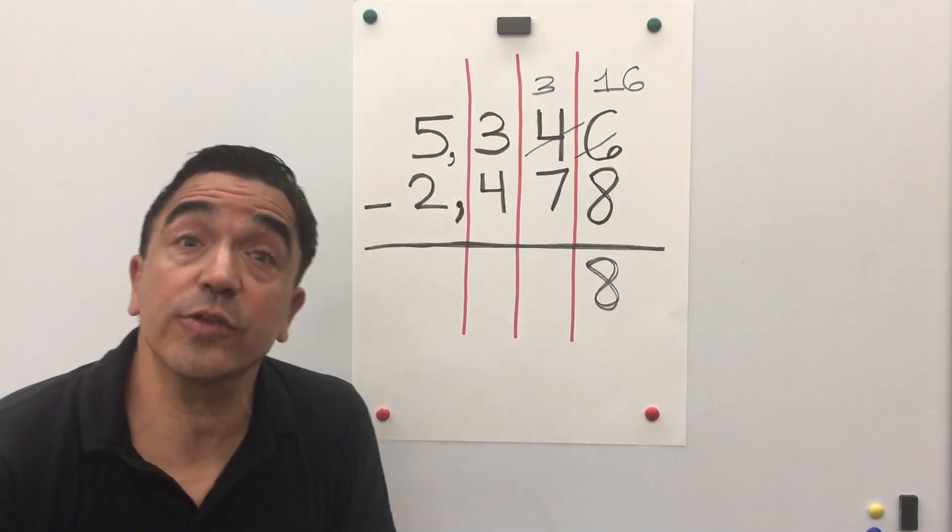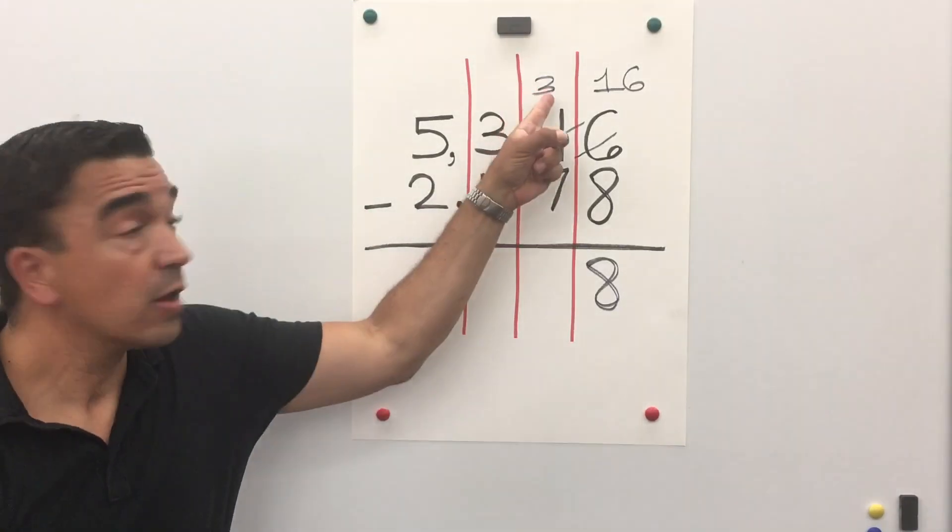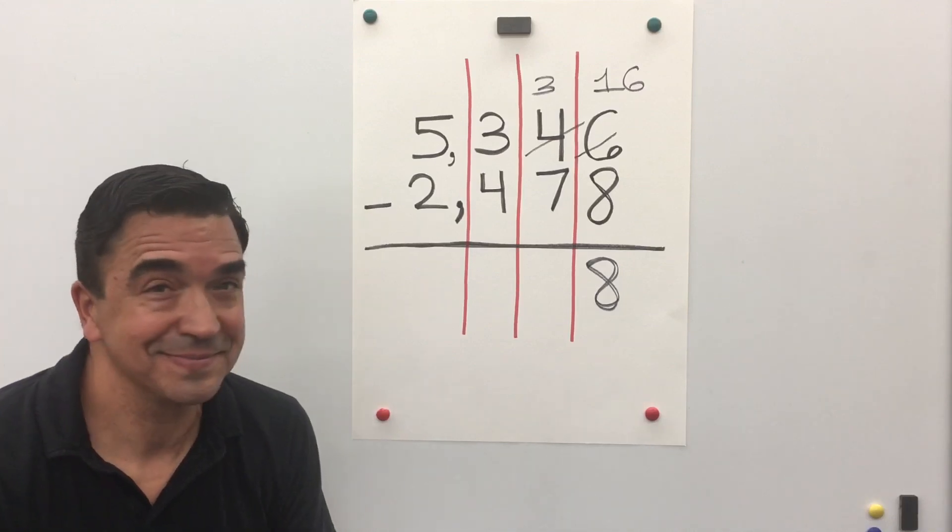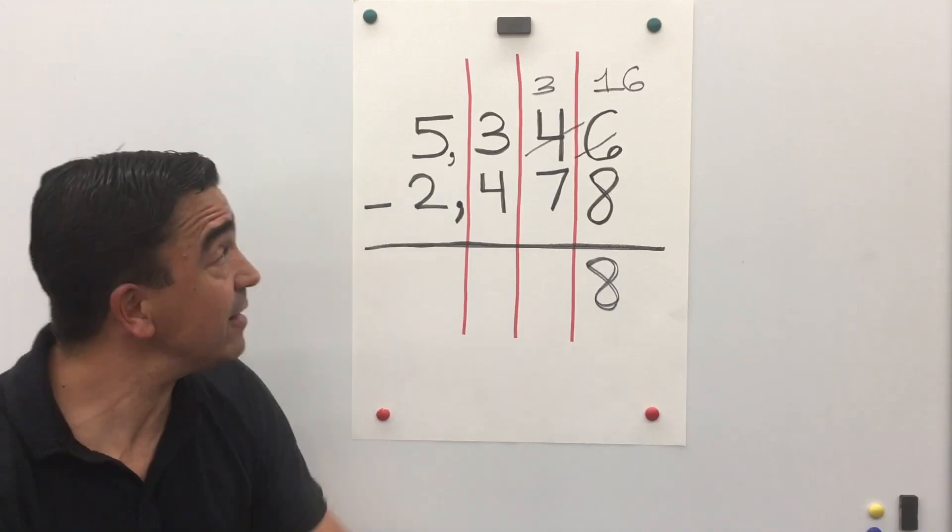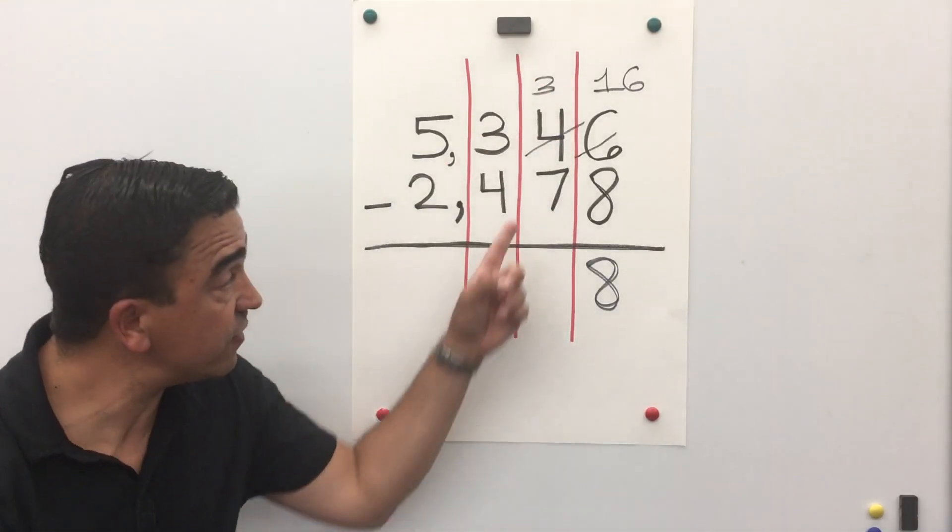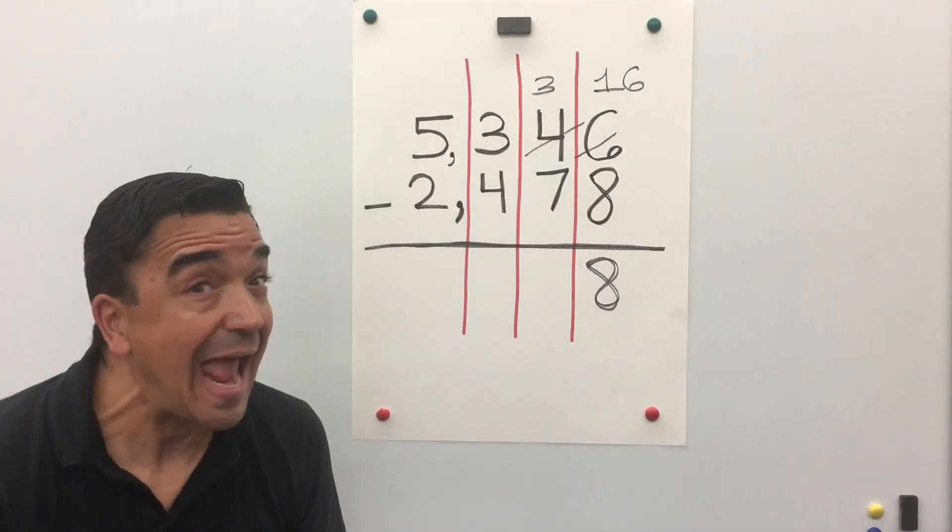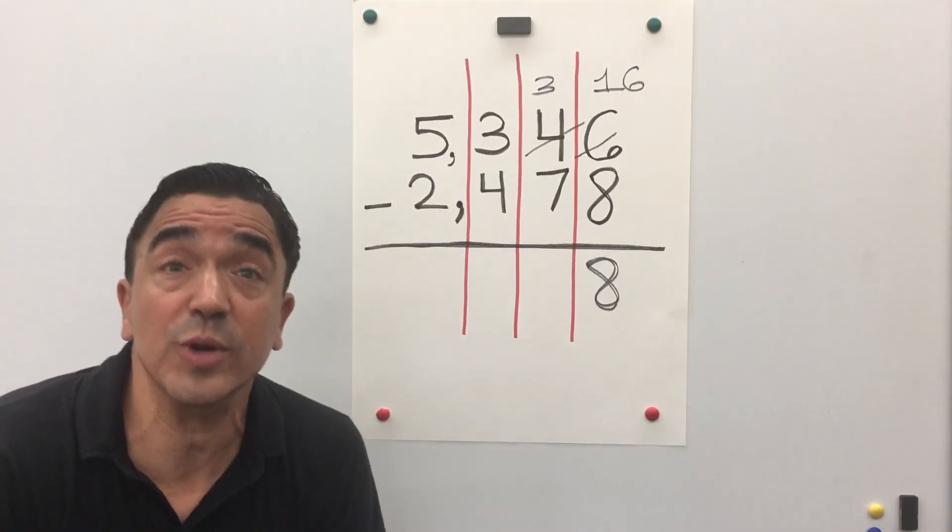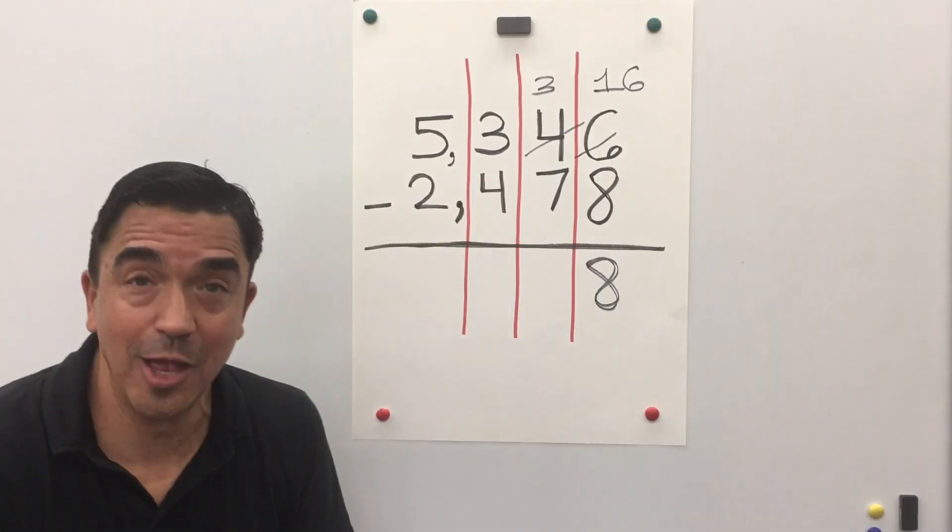Now, let's go to the tens place. 3 minus 7. Can't do it. Once again, the top number is smaller than the bottom number, and the top number must be bigger. So we're gonna regroup from the hundreds place.